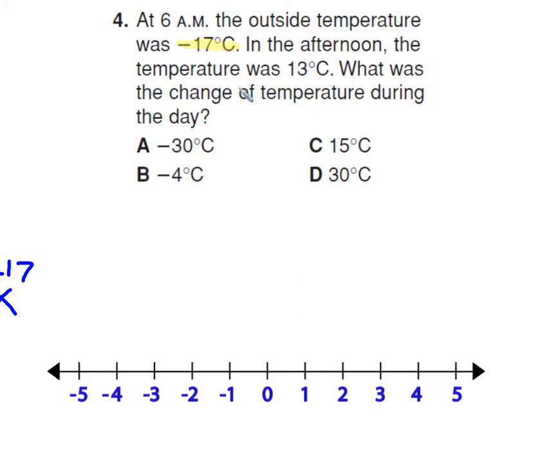In the afternoon, the temperature was 13 degrees. What's the change of temperature during the day? So 17, went to negative 17 to zero, and then we added additional 13. So if we used our number line, started at 17, we'd be here. Then we'd count 13 more.